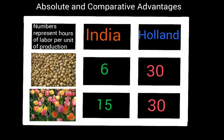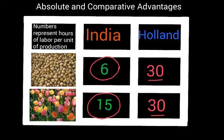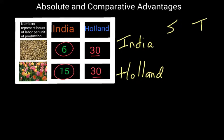India is five times as efficient in making soybeans as Holland — six hours versus 30 hours — and India is twice as efficient in making tulips. We can conclude that five times more efficient is better than two times more efficient, so India should be specializing in soybeans and Holland should specialize in the production of tulips. India produces an additional 100 bushels of soybeans and has to give up 40 cases of tulips, because they're spending 600 more hours on soybeans, and 600 divided by 15 hours per case equals 40 cases of tulips.